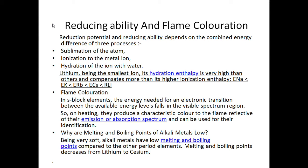The characteristic distinguishing properties of alkali metals are reducing ability and flame coloration. The reduction potential and reducing ability depend on the combined energy difference of three processes: sublimation of the atom, ionization to the metal ion, and hydration of the ion with water. Lithium, being the smallest ion, has very high hydration enthalpy that compensates for its higher ionization enthalpy, so reducing ability increases from sodium, then potassium, rubidium, cesium, and back to lithium.